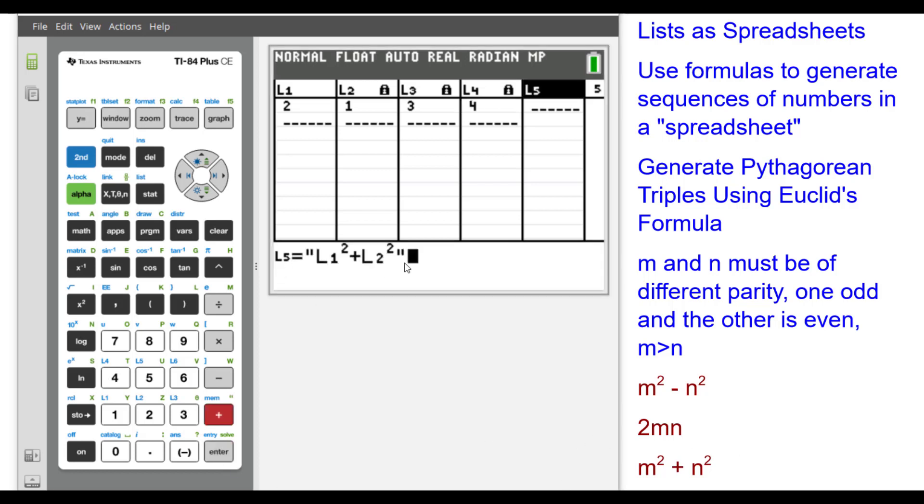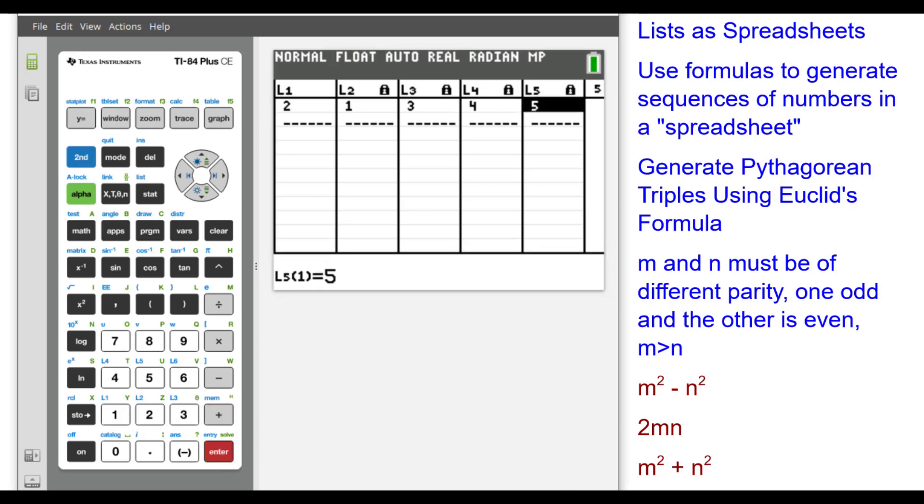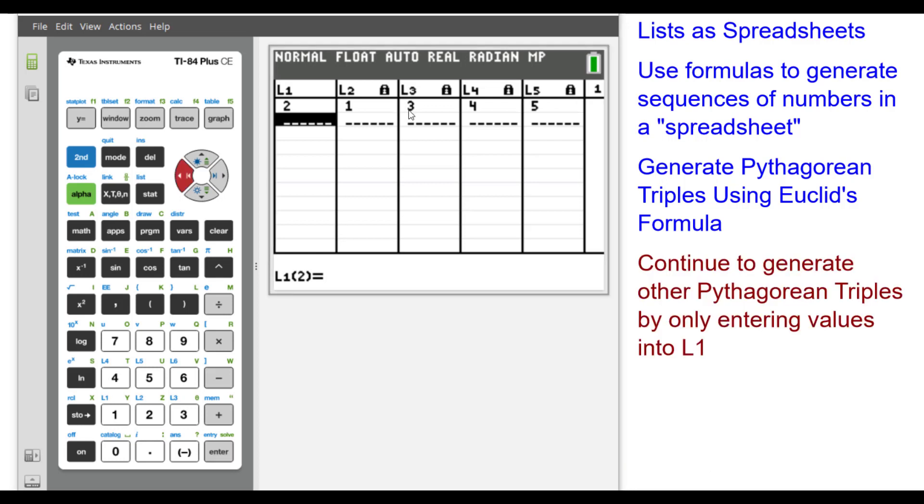And the final equation is typed here in L5. Notice the Pythagorean triple: 3, 4, 5. We'll continue to generate other triples by entering values only into list 1. So I'm going to enter in 3.